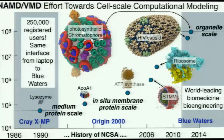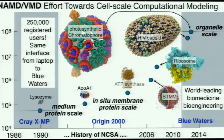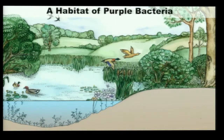I jump right away to the largest system we can study today: the photosynthetic chromatophore, which is a piece of a whole photosynthetic cell. That was actually one of the acceptance tests of Blue Waters. To simulate it requires 100 million atoms, and we achieved that in October 2012. Let me describe it: here is the habitat, but this bacterium doesn't live in the beautiful sky where plants are — it lives at the bottom of ponds, in the mud.